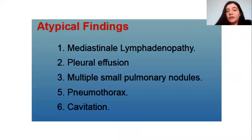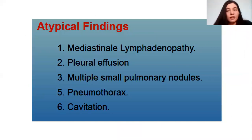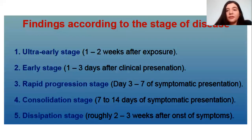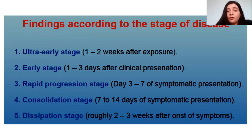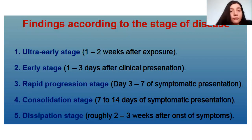The atypical findings in this virus include mediastinal lymphadenopathy, pleural effusions — very atypical — multiple small pulmonary nodules, pneumothorax, and cavitation. Regarding findings according to the stage of disease: the ultra-early stage is one to two weeks after exposure; the early stage is one to three days after symptom onset; rapid progression stage is day three to seven; the consolidation stage is seven to fourteen days; and the dissipation stage is two to three weeks after symptom onset.